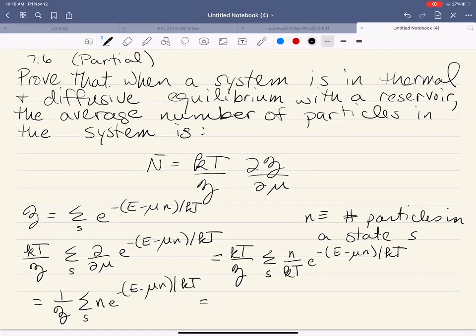Now we can pull that z inside. Remember our partition function is just a constant once we finish the summation, so we can pull that inside of our sum. So that's the sum over all s of n times our Gibbs factor e to the minus (E - μn)/kT over our grand partition function z.